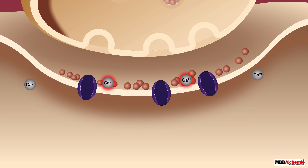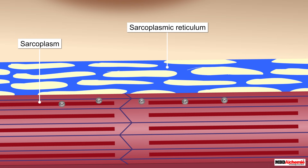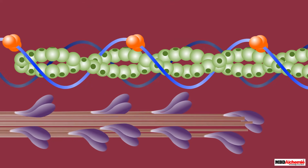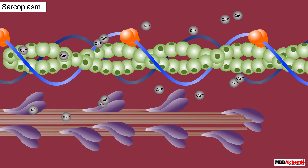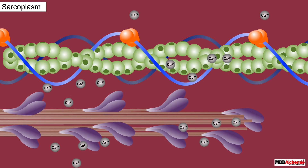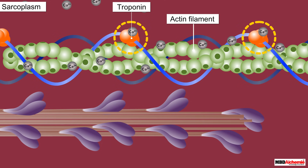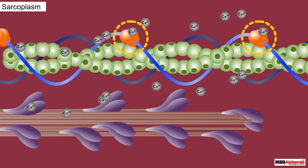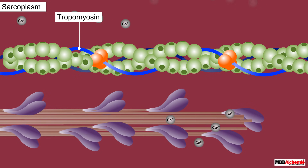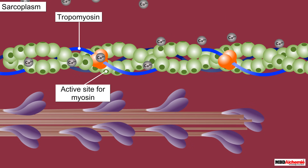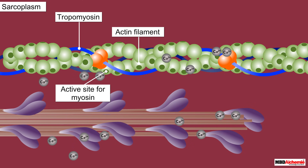This action potential spreads through the muscle fiber and causes the release of calcium ions into the sarcoplasm from the sarcoplasmic reticulum, increasing the level of calcium ions in the sarcoplasm. The increased calcium ions bind to the troponin subunit on the actin filaments, triggering a conformational change in tropomyosin, thus preventing it from masking the active sites for myosin on the actin filaments, leaving them exposed.